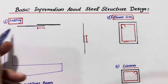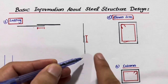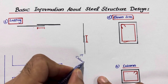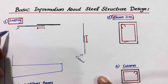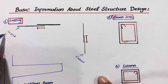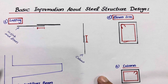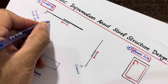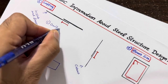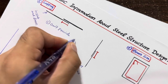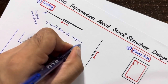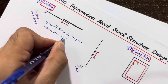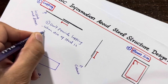First, let's look at lapping. One type is in tension and the other is in compression. The compression type is used for columns, and the tension type is used specifically in slabs and beams. One very important point to remember: do not provide lapping when the diameter of steel is 36 millimeters or more.